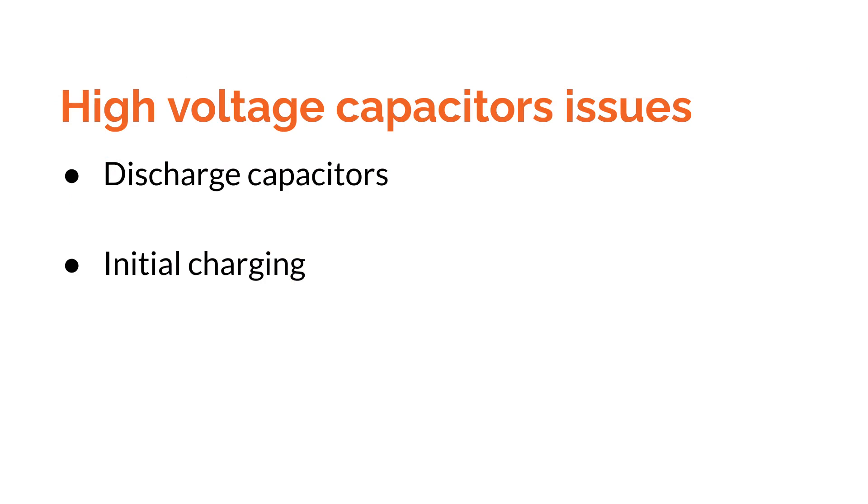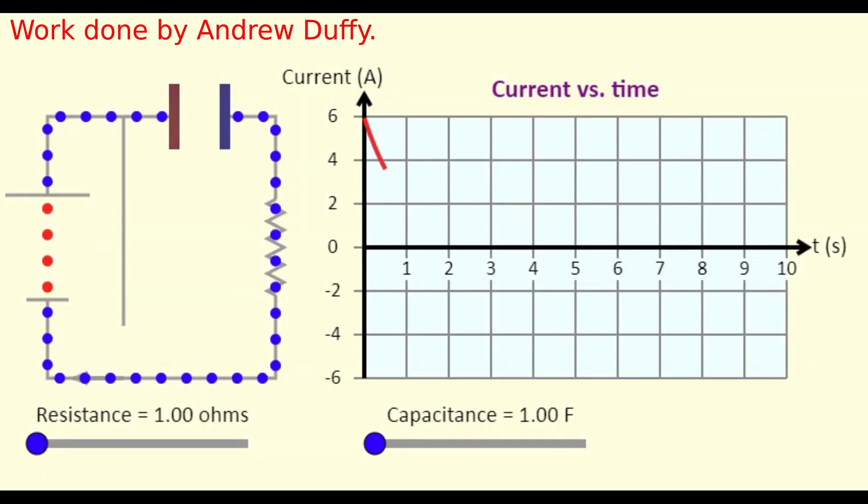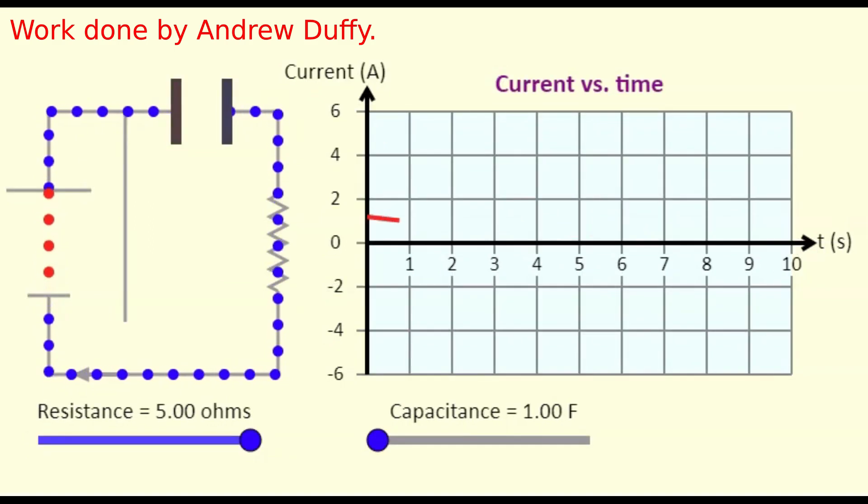The other issue that rises from the capacitors is, how do I charge them initially? Capacitors, when they're empty, are pretty much a short circuit. I don't want to connect the mains voltage directly to the capacitors when starting. That'll create a huge inrush of current. To mitigate this issue, I decided to initially charge the capacitors using a large high power resistor, and after a while of charging them, bypass this resistor using a relay.